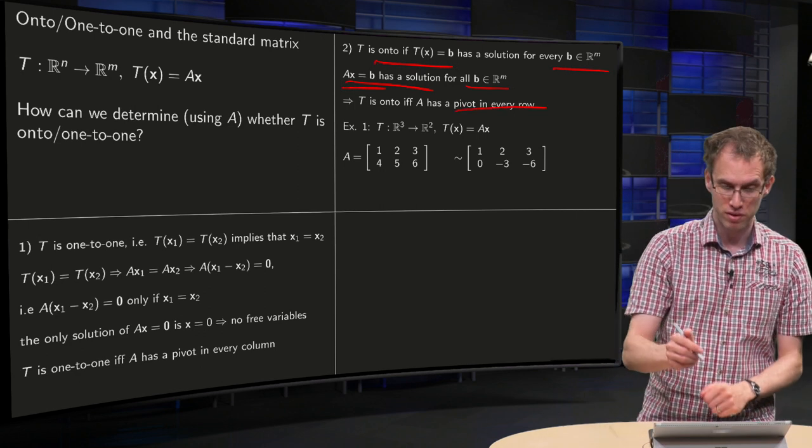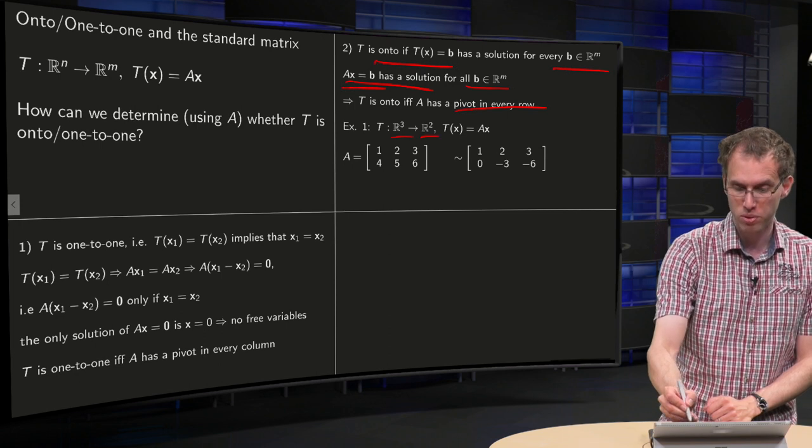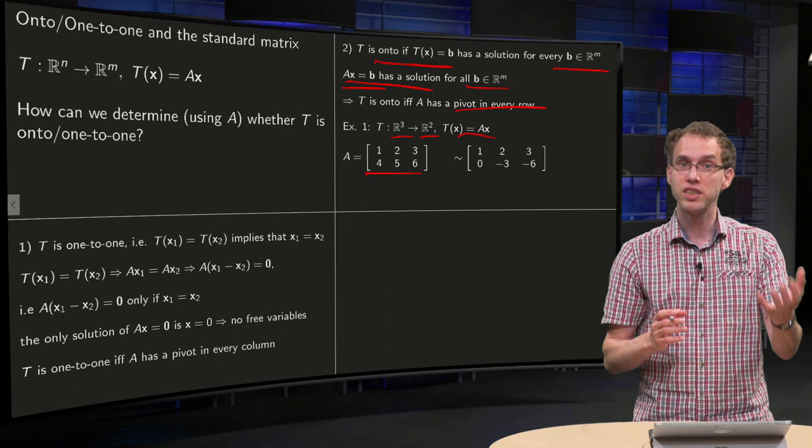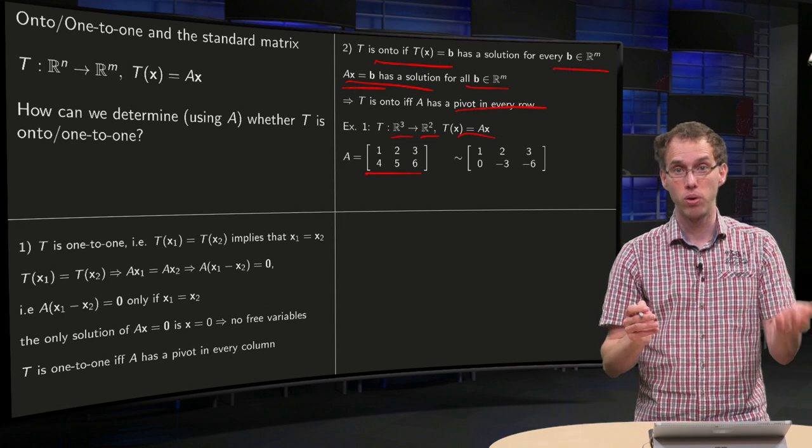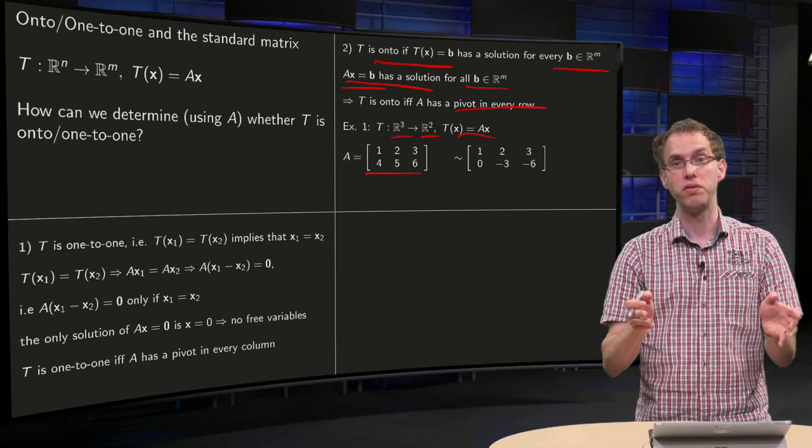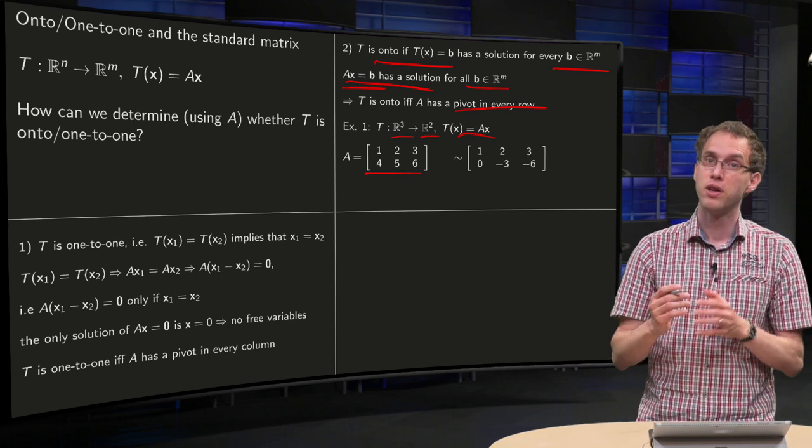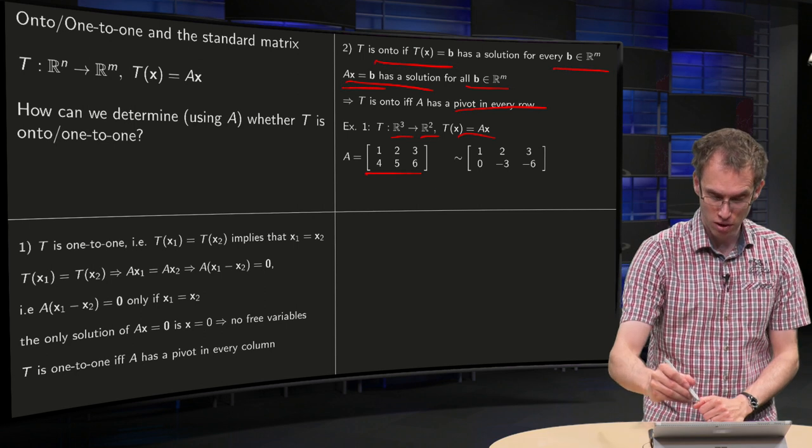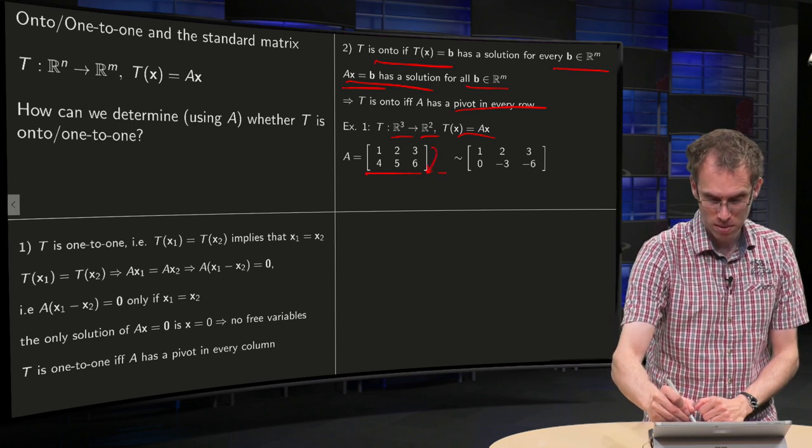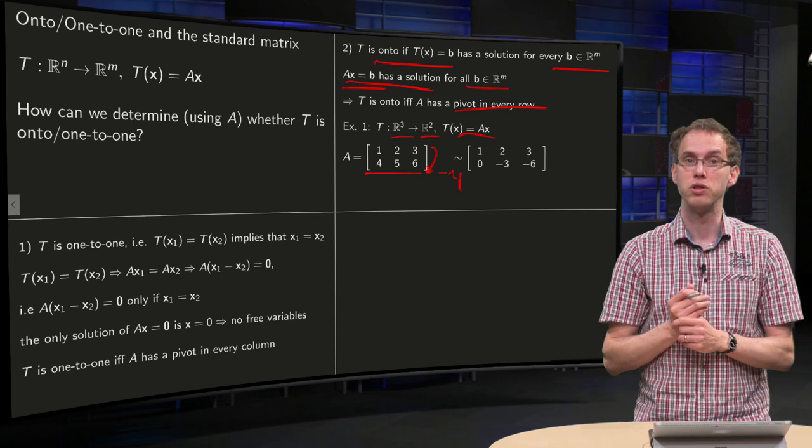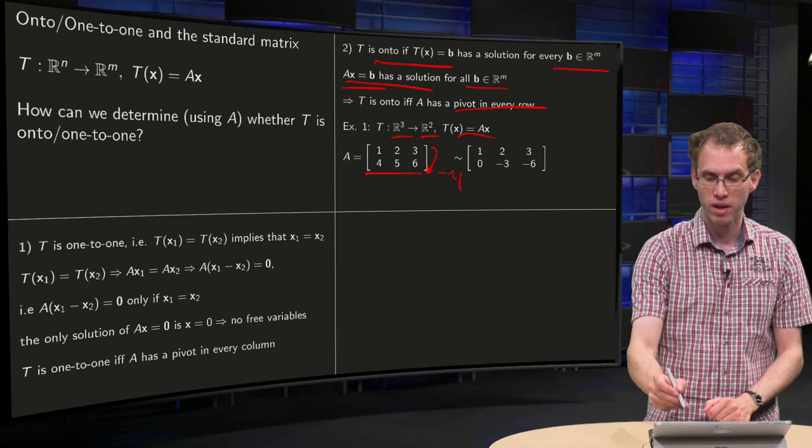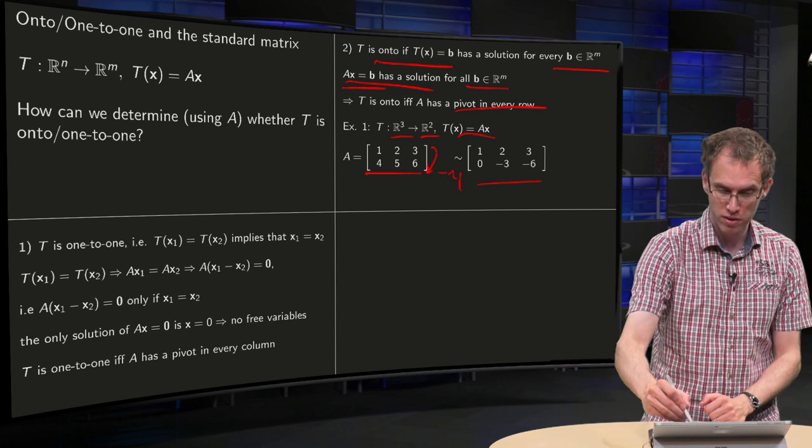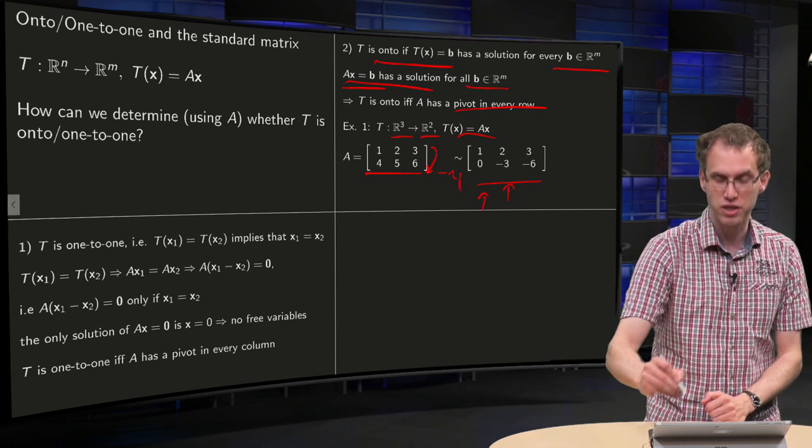Let's do an example. We have a T from R^3 to R^2 given by T(X) equals A times X. And here we have our matrix A. Question is, is our transformation T one-to-one, onto, both of them or neither of them? So we have to investigate where the pivots are. So we do row reduction step, minus four times the first row added to the second row. And here we have our echelon form. And we see where the pivots are. They are on the first and second column.